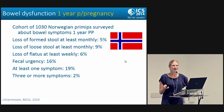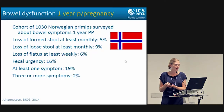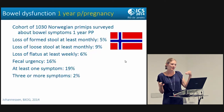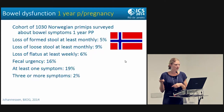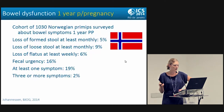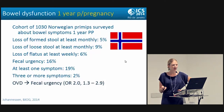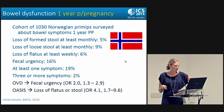Looking at the same Norwegian primip cohort one year later: the incidence of loss of formed stool at least monthly was only 5%, loose stool at least monthly was 10%, loss of flatus at least weekly was 6%, fecal urgency was about 16% (down from 20%), at least one symptom in 19%, and three or more symptoms in 2%. Having had an operative vaginal delivery was significantly associated specifically with fecal urgency, suggesting it's not necessarily the anal sphincter injury alone. OASIS was associated with loss of flatus or stool at this one-year follow-up.